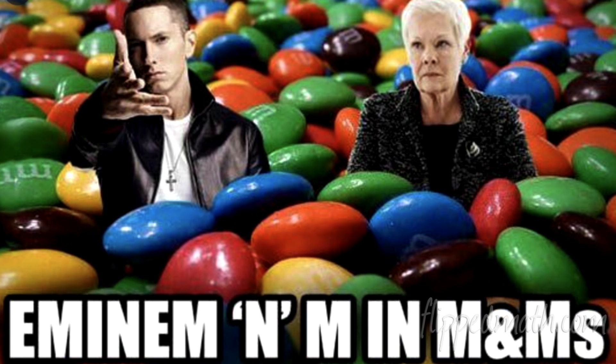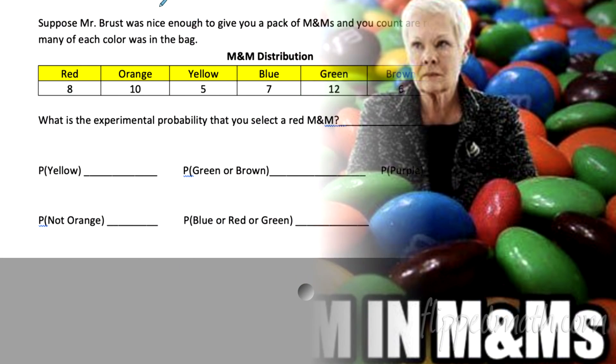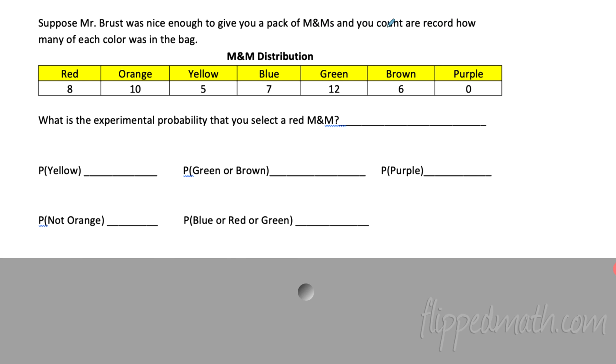In this last example, we're going to be dealing with M&Ms. Y'all love those M&Ms. So Mr. Bruss was nice enough to give you a pack of M&Ms. And you count and record how many of each color was in the bag. What's great about this is we know this is experimental data. It's like he gave you a bag and we're going to start counting and we're going to write down all of that data. So we're going to be doing experimental probability with this here. Look at all these different colors. What is the experimental probability that you select a red M&M? Let's do these fractions reduced. So what do we got? Experimental red. So there's eight. First thing we need to do is we need to count up the total. So how many M&Ms total are there? So we have 18 and five. That's 23, that's 30. So I say 48. There are 48 totals. The total number of M&Ms is 48.